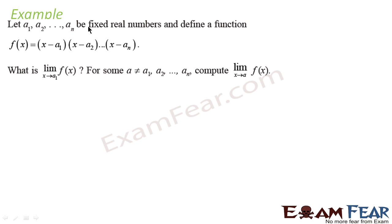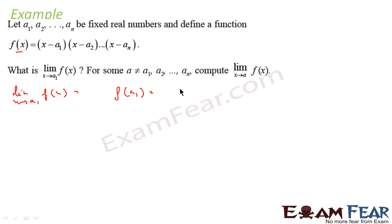In this example, we are given a function: f(x) equals x minus a1 into x minus a2 into x minus a3 into x minus a4, all over x minus a1. We have to find the value of this function as the limit of x tends to a1. To do that, we will just put x equal to a1 and see if it is not infinite. We try f(a1): this becomes a1 minus a1 into a1 minus a2 dot dot dot, which becomes zero. So this is a valid finite value.